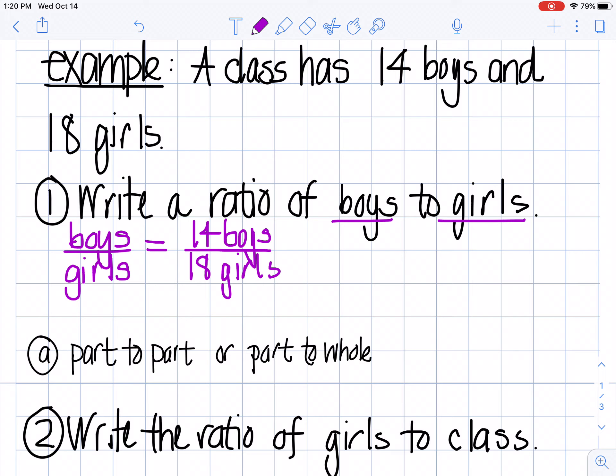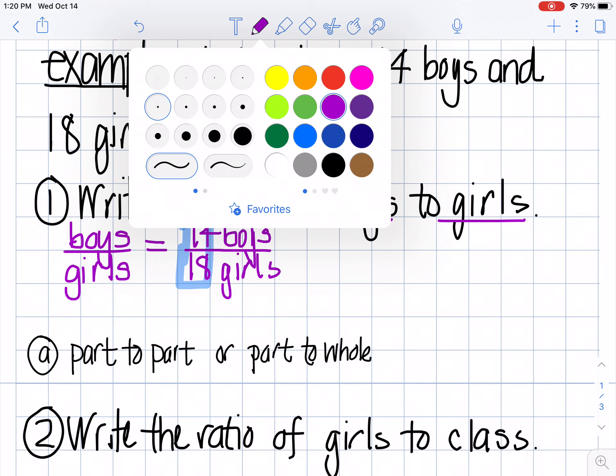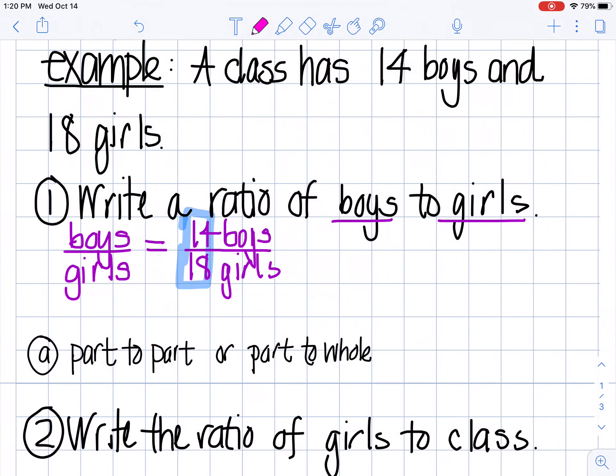The other thing that you have to remember about ratios is that because they're written like a fraction, you want to write them in what we call simplest terms or simplest form. So you want to take this fraction and reduce it. So you have to ask yourself, is there a number that goes evenly into 14 and 18? So I'm going to take 14 and divide it by 2, and that gives me 7. So 7 boys. And what's 18 divided by 2? 9.